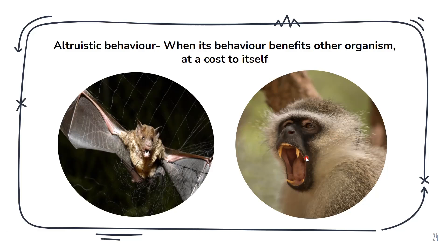Another example is the vervet monkey. Whenever it senses the presence of a predator, it gives a call. This call is beneficial to other members of the species because they understand a predator is nearby. However, giving this call puts itself at risk and makes it most susceptible to attack, since the predator can locate the caller.